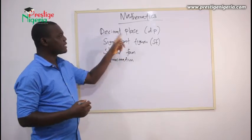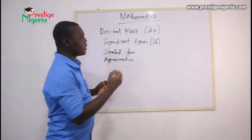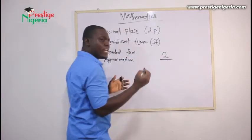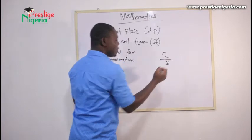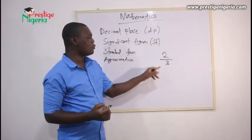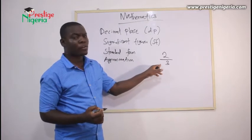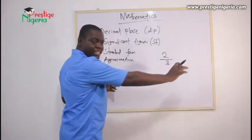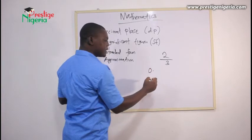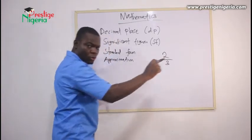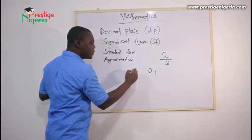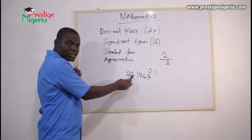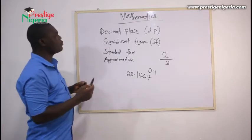Let's start with decimal place. If you have a number like 2 and you divide it by 3, this gives you a fraction. If you want to represent this fraction as a linear digit, you get something like 0.something, for example 3.1467. This dot is called the decimal point.